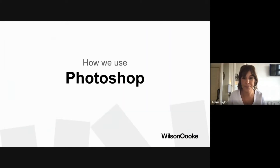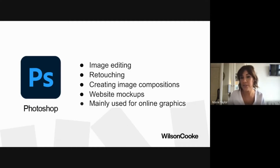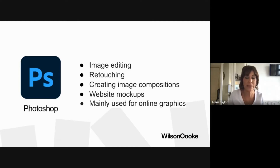Moving on to Photoshop — Adobe Photoshop is an imaging and graphic design software used by thousands of people in many different roles across the world. Not only is it used for image editing, but you can use Photoshop for retouching photographs and creating image compositions. For instance, you can design the look of a site in Photoshop, export it as a JPEG, send it to a customer for approval, and then move on to building the site in WordPress. Photoshop tends to be used for online graphics rather than print because it creates graphics using pixels rather than vectors.